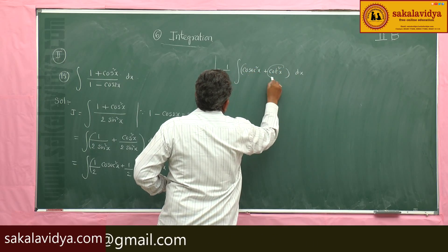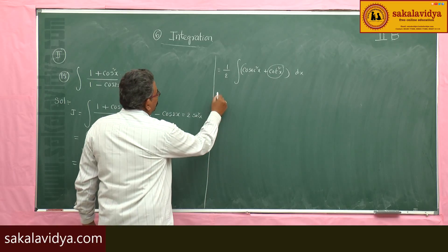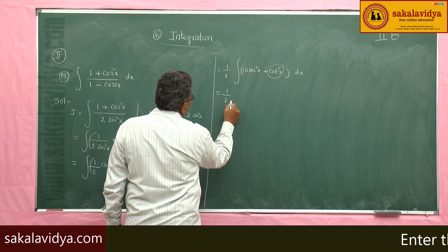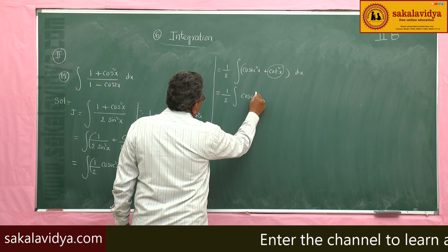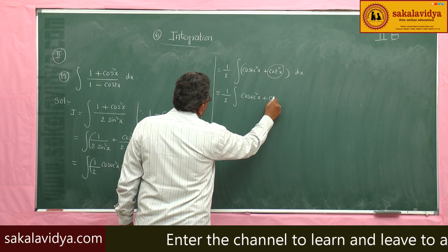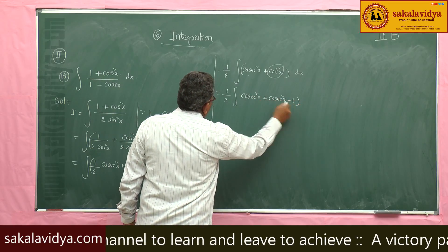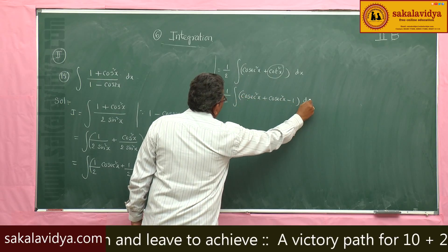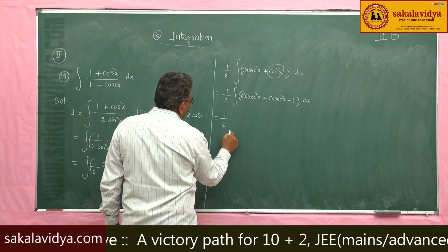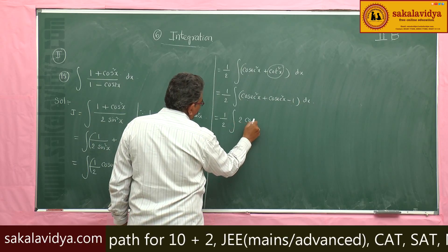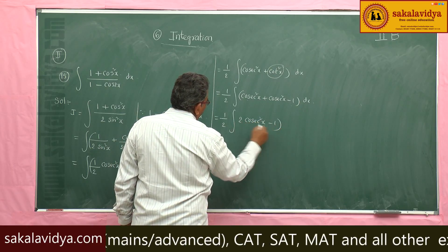Let us change cot²x in terms of csc²x. So we have (1/2) times the integral of csc²x + (csc²x - 1) dx, which simplifies to (1/2) times the integral of 2csc²x - 1 dx.